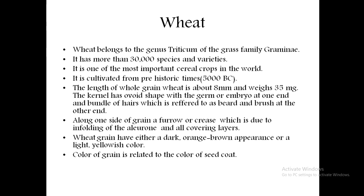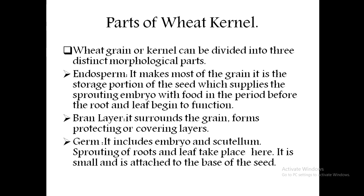An ideal wheat grain has a length of 8 millimeters and it weighs around 35 milligrams. It is grown in almost all parts of the world except Antarctica. The kernel — which is simply another term for the wheat grain — can be divided into three distinct morphological parts.